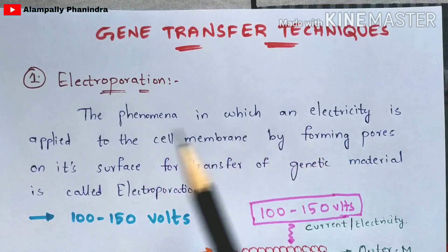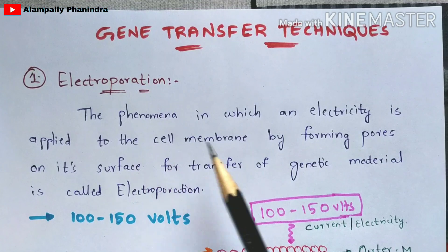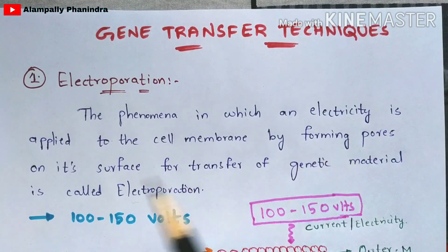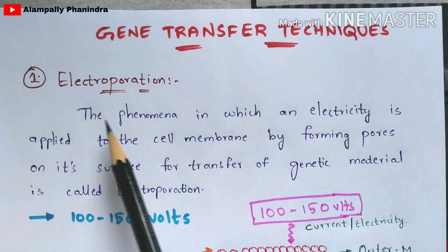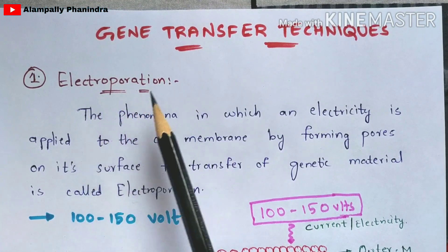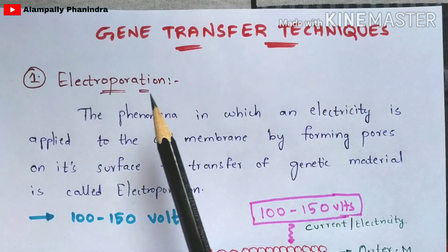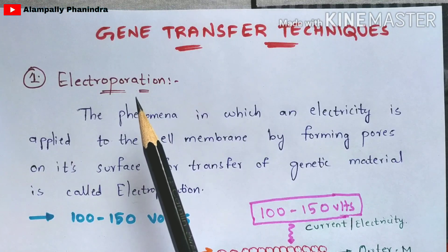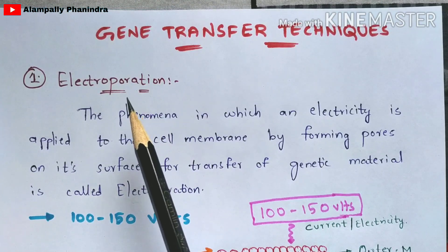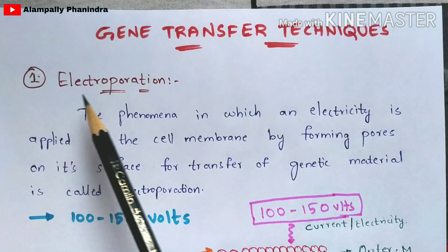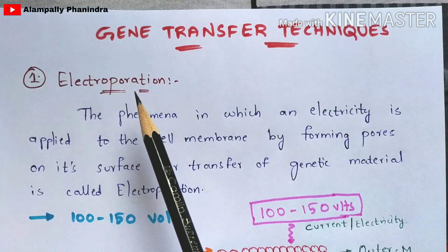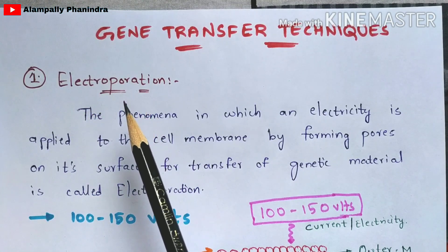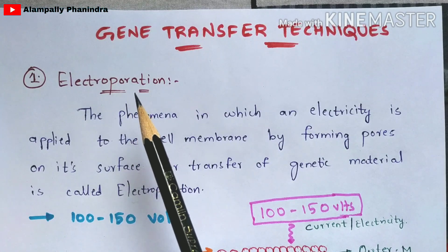Electroporation is the phenomenon in which electricity is applied to the cell membrane, forming pores on its surface for the transfer of genetic material. The name itself indicates that electroporation means forming a pore on the cell membrane using electricity — 'electro' referring to electricity and 'poration' to pore formation.